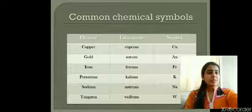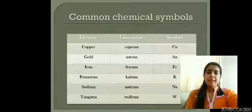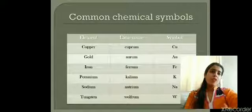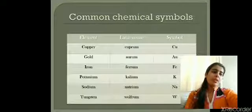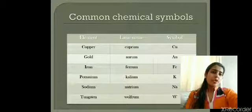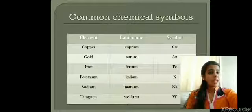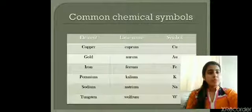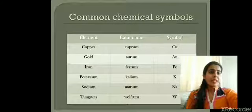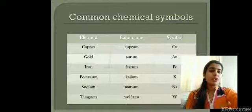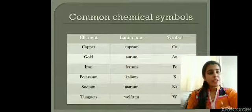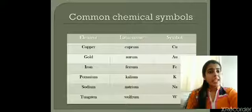Some elements have symbols derived from their Latin names. For copper we don't write CO — CO is written for cobalt — for copper we write Cu. For gold we write Au. For iron, capital I is for iodine, so we write Fe. For potassium we write K, not P, as P is for phosphorus. For sodium we write Na, derived from natrium, its Latin name — not S, because S is for sulfur.